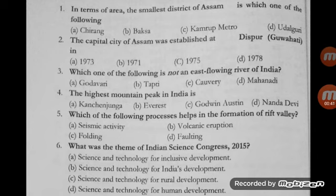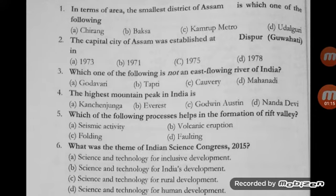The very first question: in terms of area, the smallest district of Assam is which one of the following? The correct answer is option C, that is Kamrup Metro — this is the smallest district in Assam. You would also like to know that the largest district in respect of area is Karbi Anglong. Please note it down.